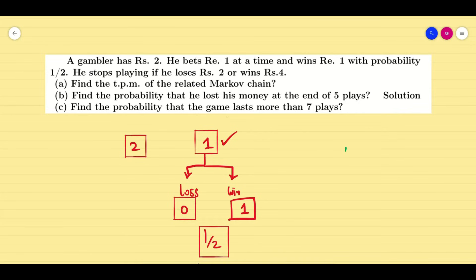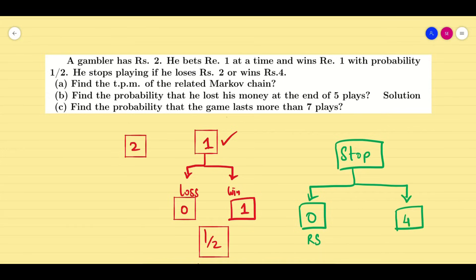The next condition given to us is when he will stop the game. There are 2 chances. The first chance is if he loses all the money — that means he will have 0 rupees — then he will stop the game, because automatically when you don't have money, they will not allow you to play. The second option: suppose he is winning 4 rupees. Since he already has 2 rupees, 2 plus 4 equals 6. If he has 6 rupees in his pocket, he will stop the game — either if he wins 4 rupees or if he loses all the money and becomes a pauper with 0 rupees.